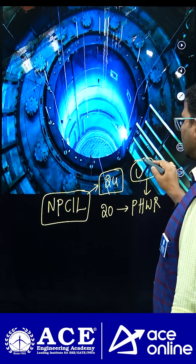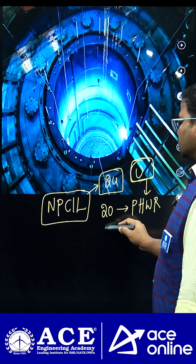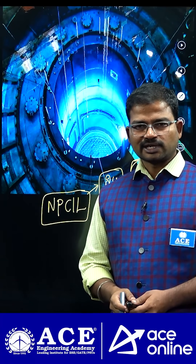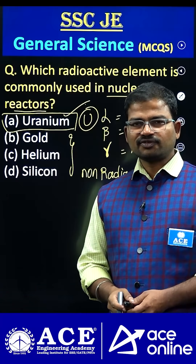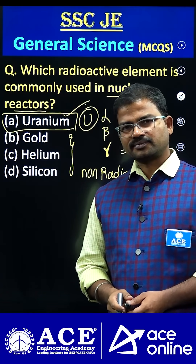In these reactors, the major fuel is uranium and its related derivatives. Now, if you are using plutonium as a fuel instead, what would be the name of those nuclear reactors? If you know the answer, please comment. Thank you.